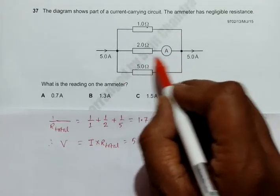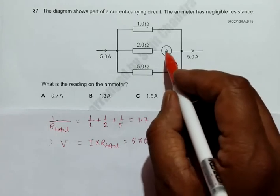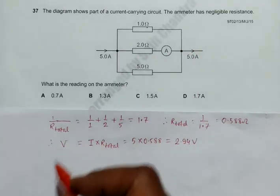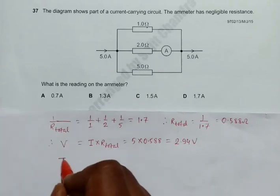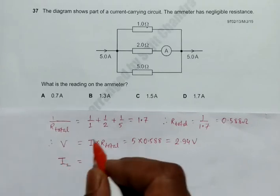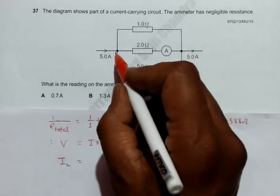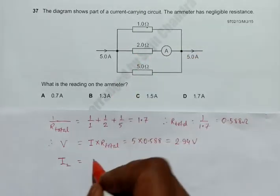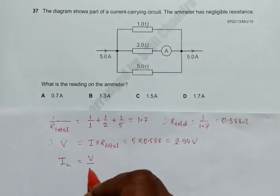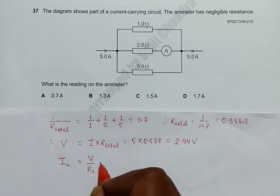the reading in the ammeter here, we have to find the current through this branch. So the current through this branch will be I2, which equals the PD across this, V, divided by this resistance R2, which will be equal to V is